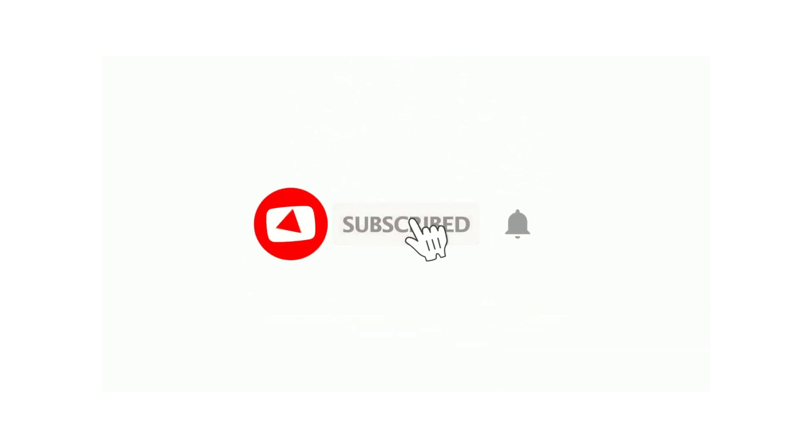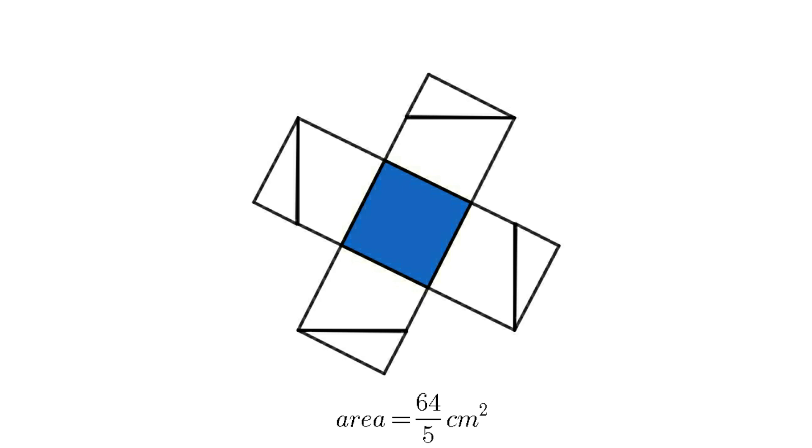We can also use another method to solve this problem. We can rearrange the square like this. Then we get 5 squares with same area. So area of blue square equals 64 by 5 cm squared.